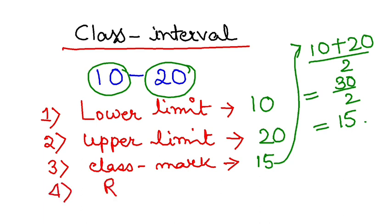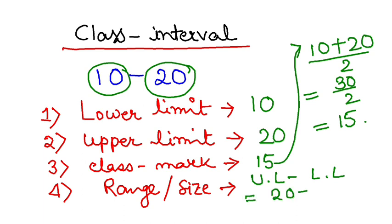Number four, the last one is called range or size. You have to do upper limit minus lower limit. Upper limit is 20, lower limit is 10, so my range or size of the class is 10.